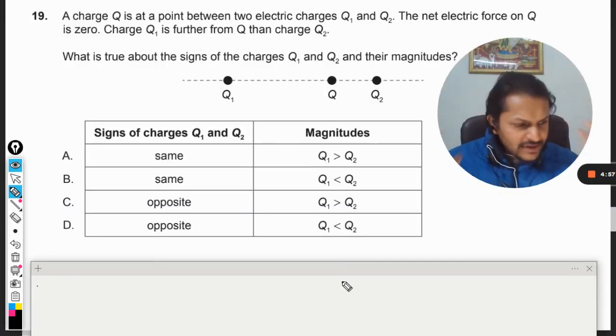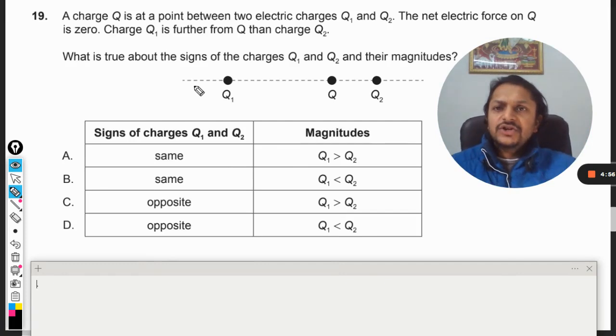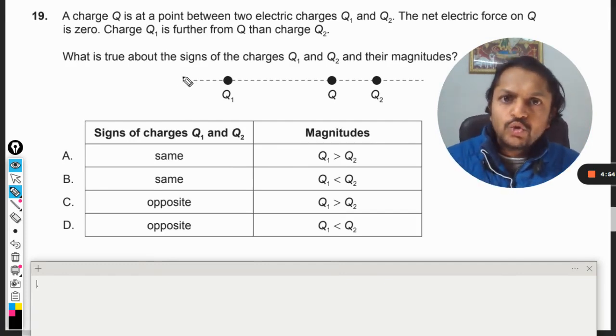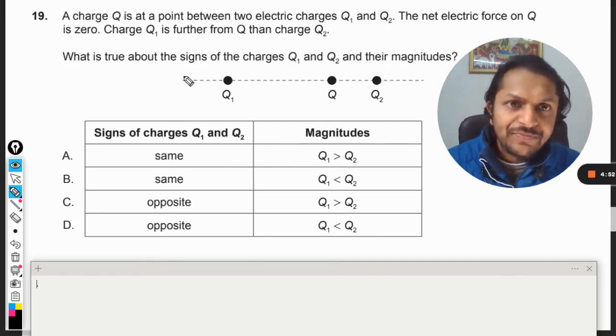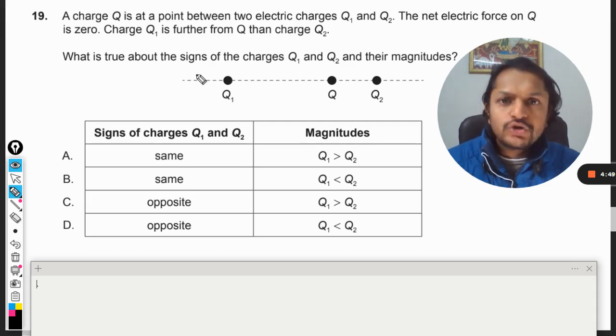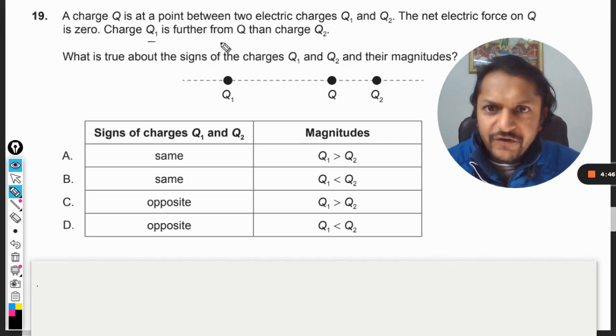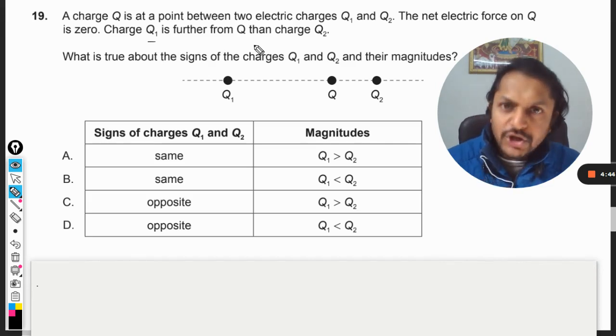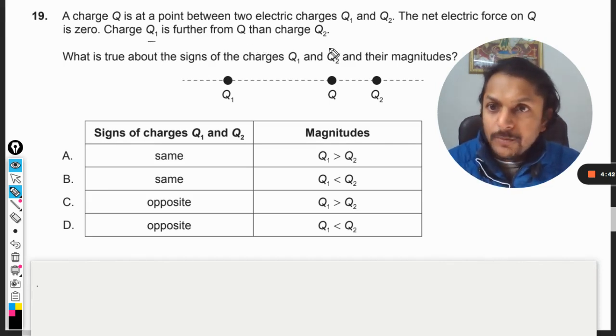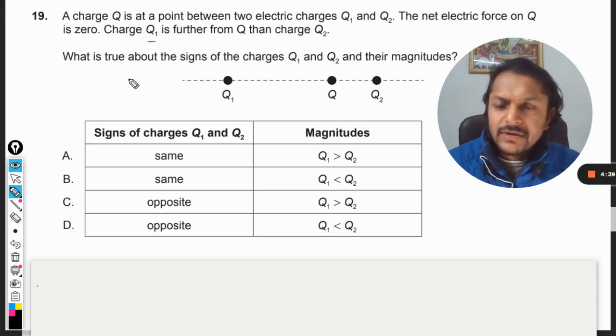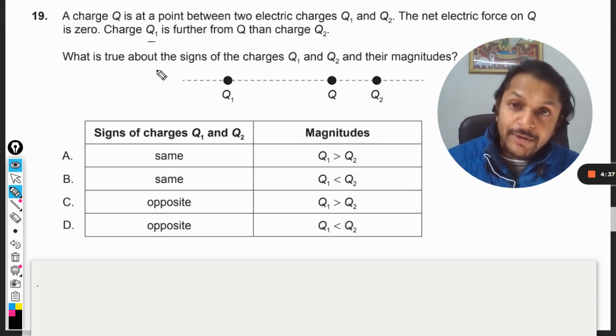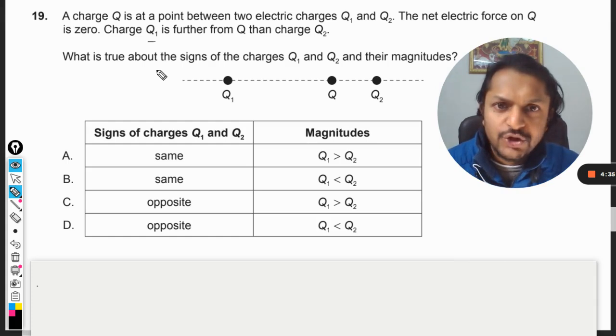Okay dear students, let us see what is there in this question. A charge q is at a point between two electric charges q1 and q2. The net electric force on charge q is zero. Charge q1 is further from capital Q than the charge q2. What is true about the signs of the charges q1 and q2 and their magnitudes?